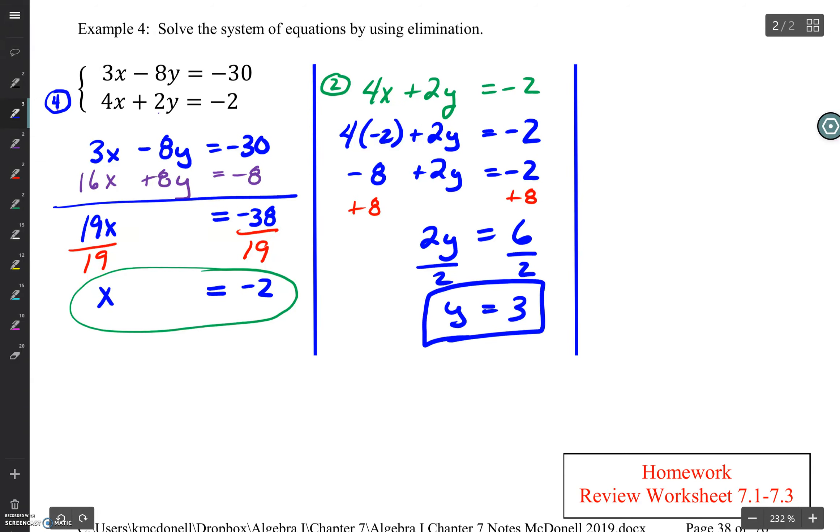Now, are we done? Well, we've solved using equation 2, so we need to check it with equation 1. I'm going to rewrite equation 1 up here. 3x minus 8y equals negative 30. When we plug that into the problem, we've got to plug in the x value, which is negative 2.